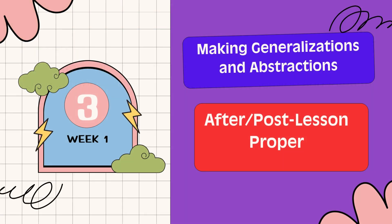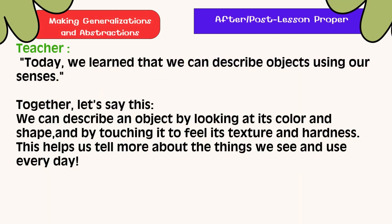Making Generalizations: Today, we learned that we can describe objects using our senses. We can describe an object by looking at its color and shape, and by touching it to feel its texture and hardness. These help us tell more about the things we see and use every day.